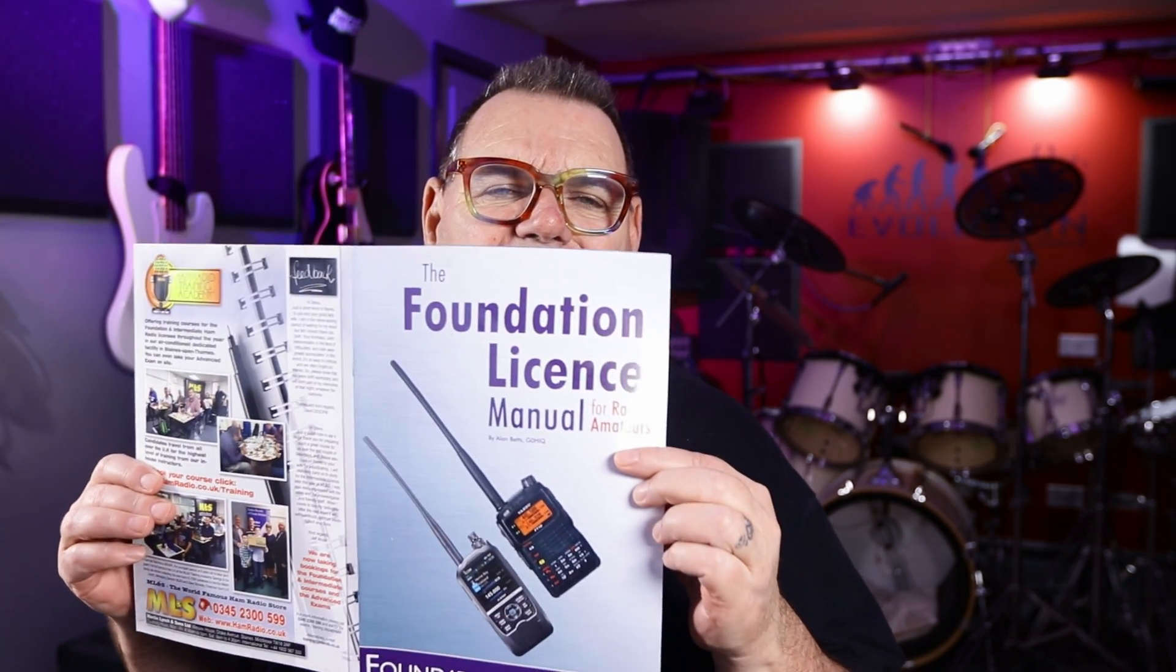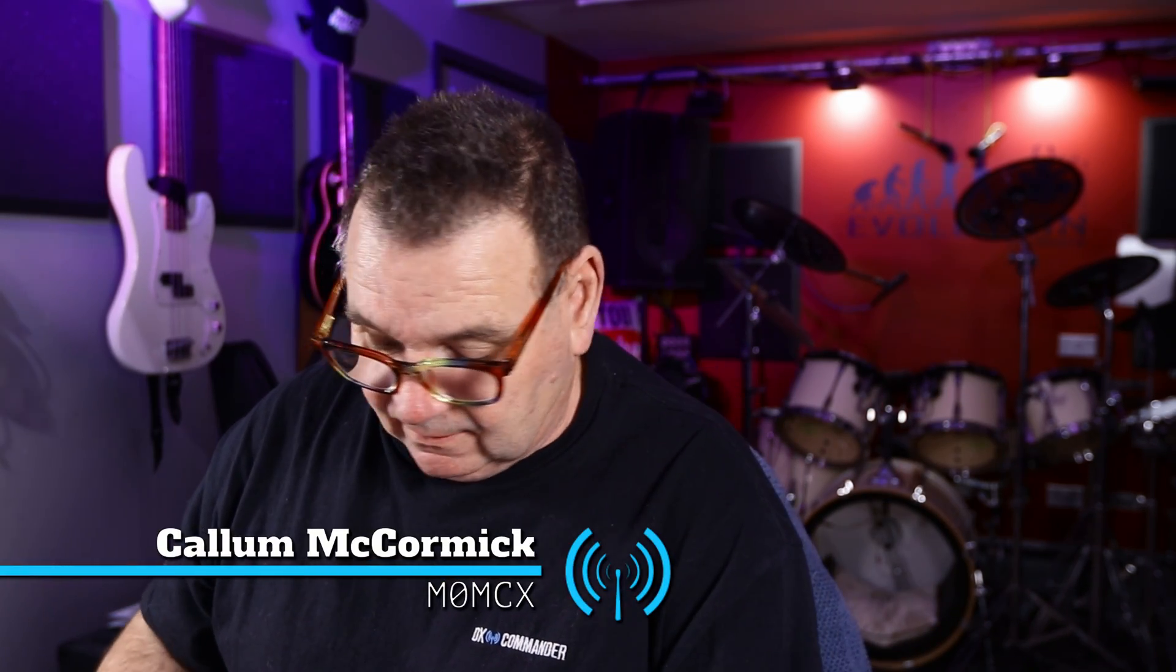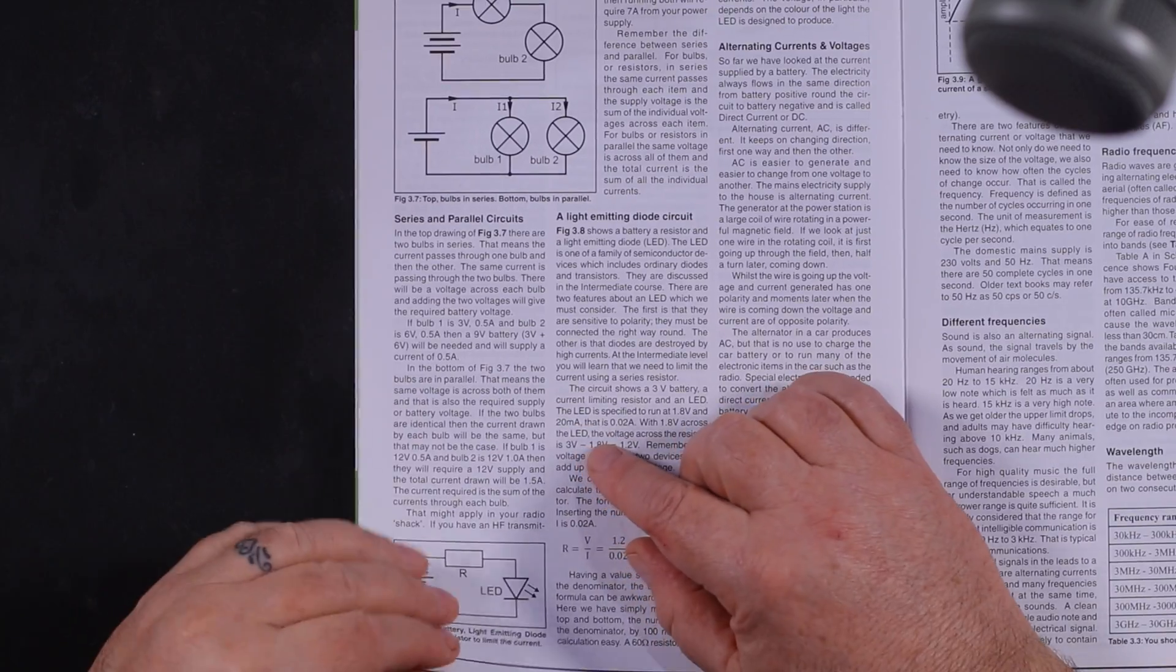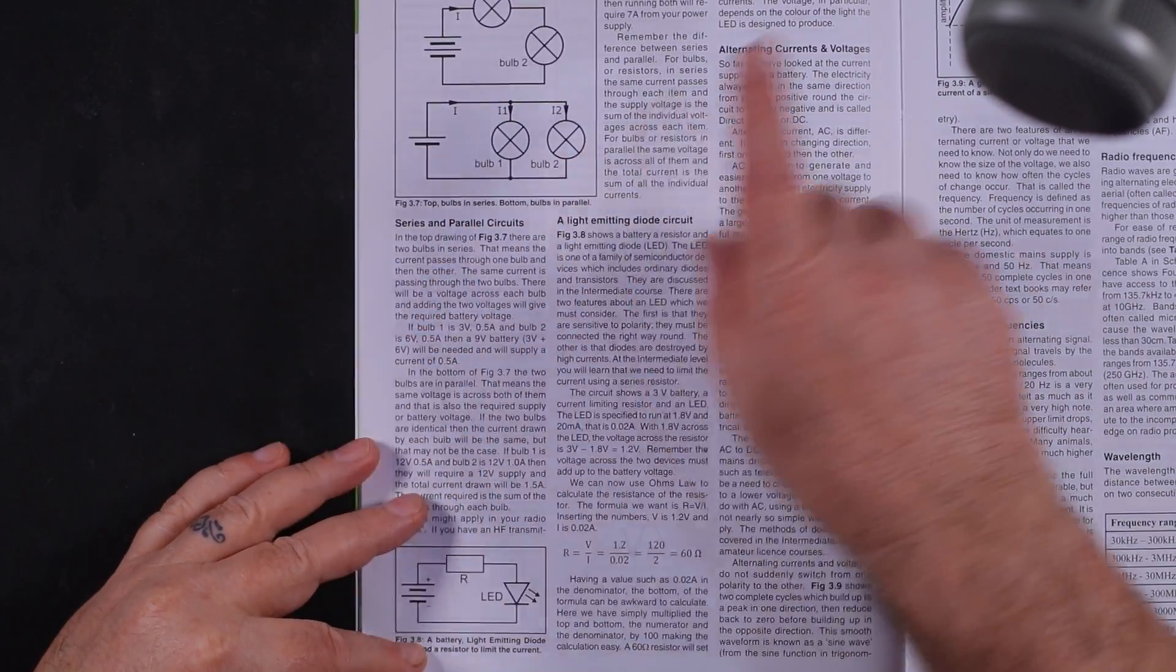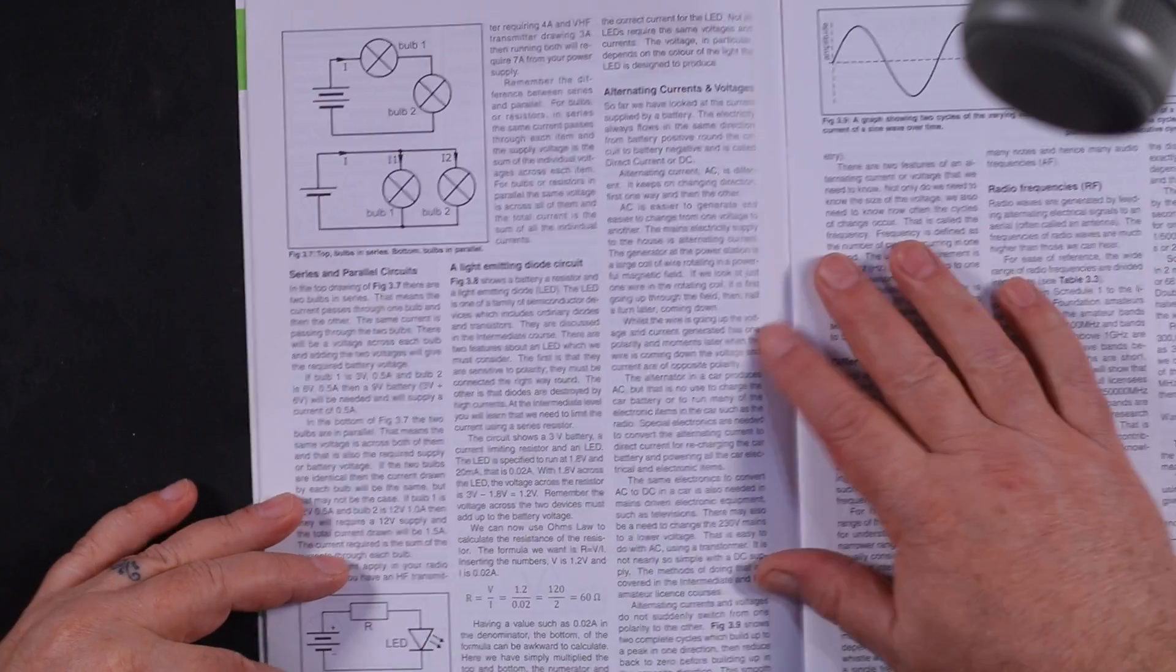I want to talk about frequency and wavelengths today. This is kind of part 8 of the foundation exam, but it'd be interesting for anybody who's just interested in wavelength and that sort of thing. I'm on page six of this book here. It talks briefly, we'll go on to alternating current voltages and frequency in a minute.